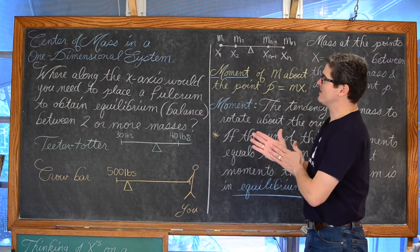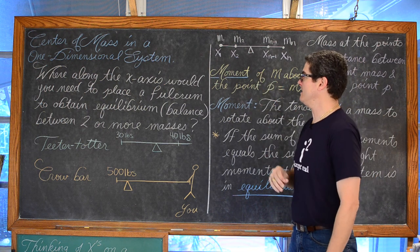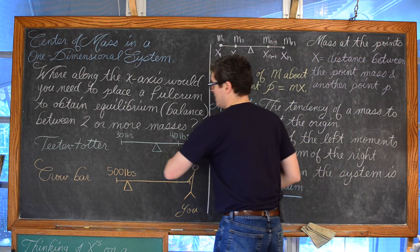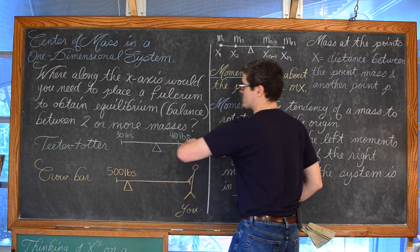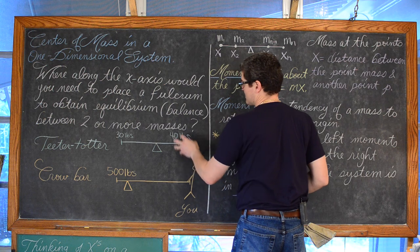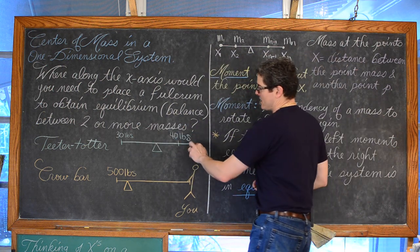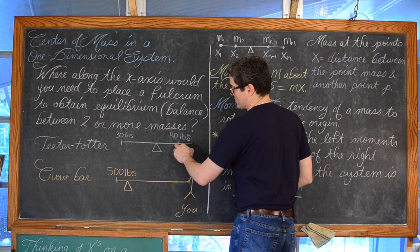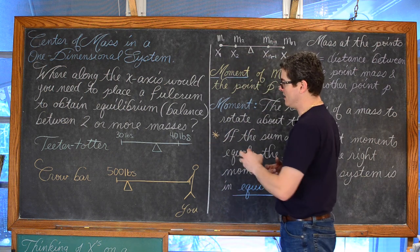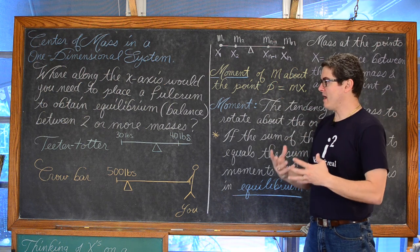The center of mass of a one-dimensional system: where along the x-axis would you need to place a fulcrum to obtain equilibrium or balance between two or more masses? Think of the teeter-totter. If we have one child who is 30 pounds and another child who weighs 40 pounds, that child who weighs 40 pounds would have to be closer to the balancing point or the fulcrum for this one-dimensional system to be in balance or in equilibrium.